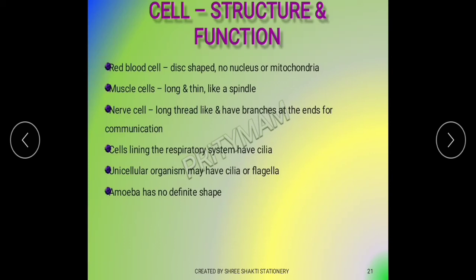The cells of a giraffe or elephant are the same size as the cells of a mouse or worm. The size of an organism depends on the number of cells, not on the size of the cells. Some organisms are made of 100 cells, some tissues have 200 or 500 cells, and some organisms require trillions of cells.